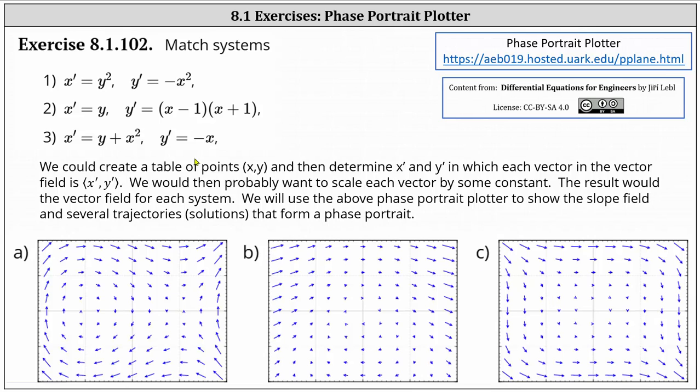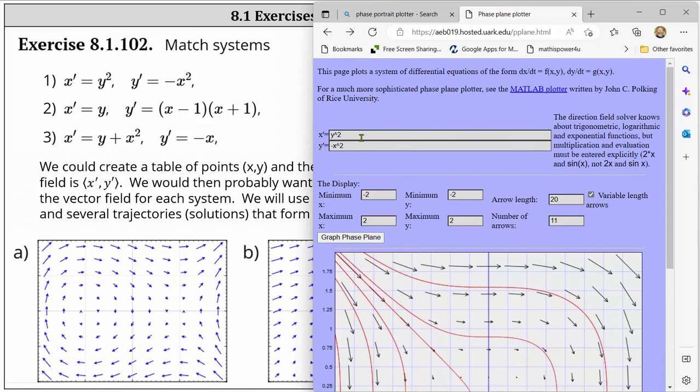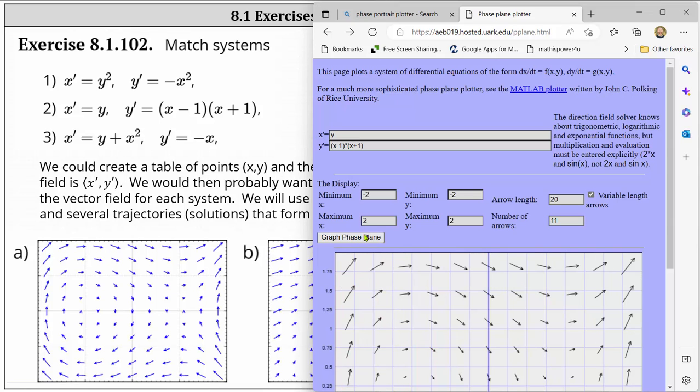And now let's move along to number two. Scroll back up and change our equations. X prime equals y. Tab y prime equals the quantity x minus one x plus one. Graph phase plane.